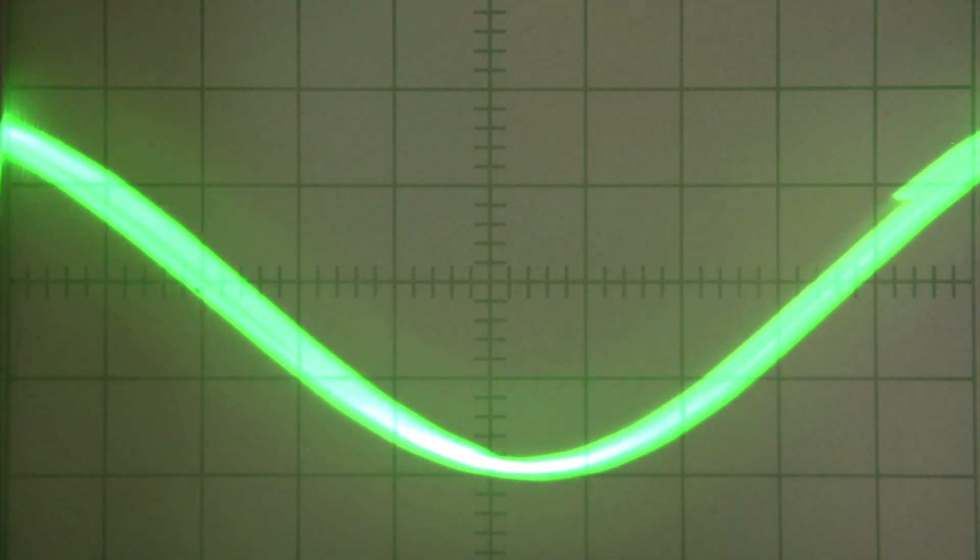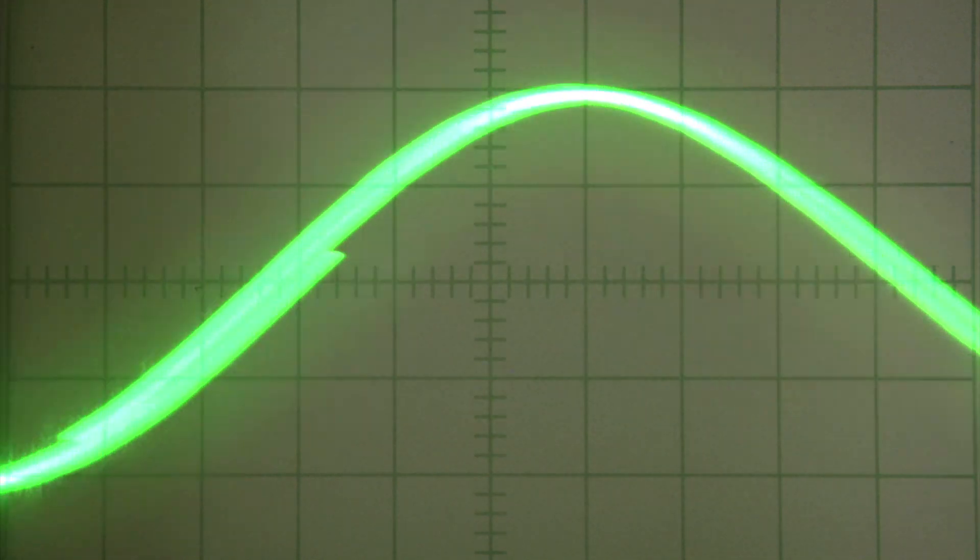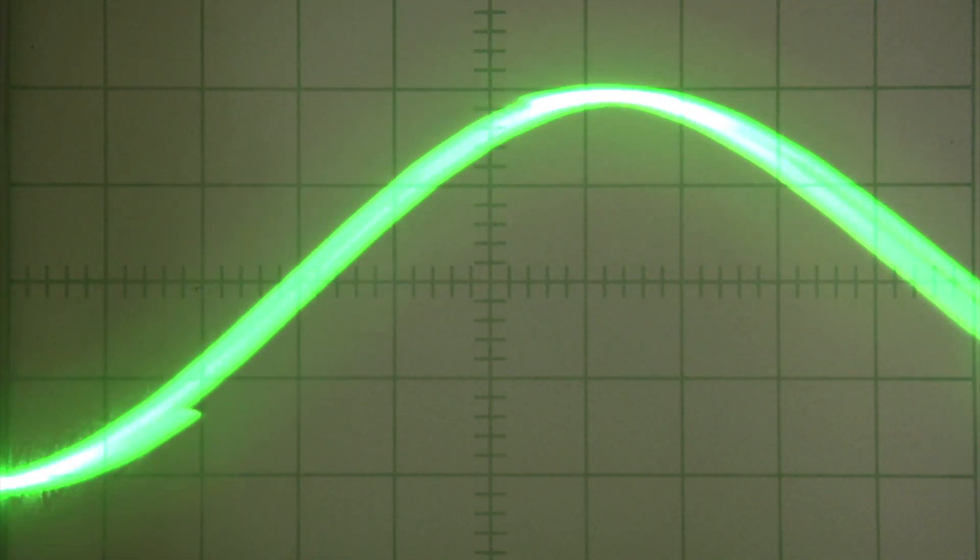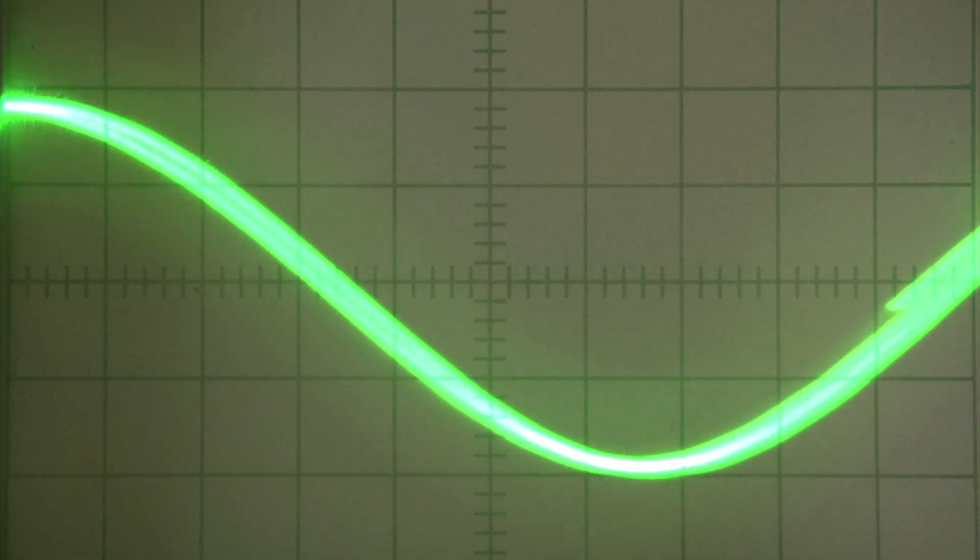Although the signal was short, just four up-and-down wave cycles, the team could still analyze it, parsing out its amplitude, its shape, and how its frequency changed over time.